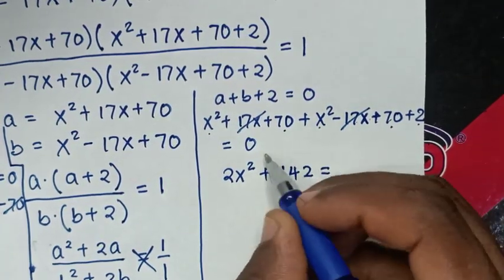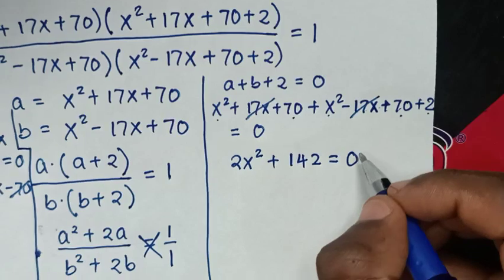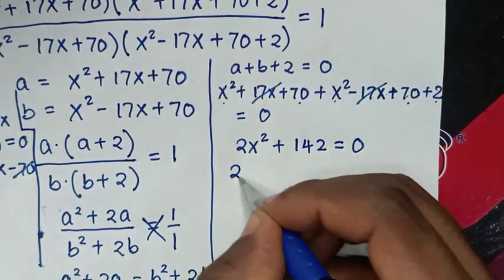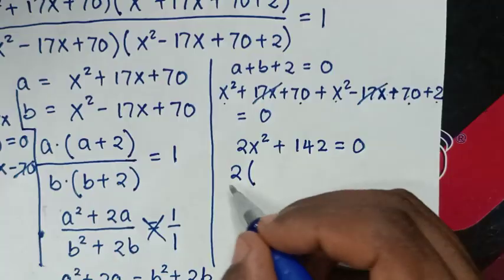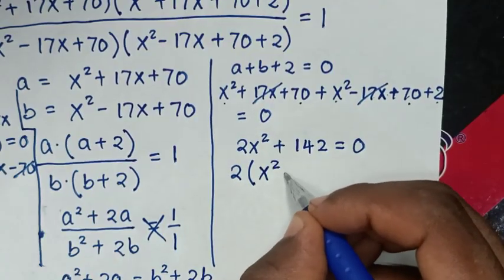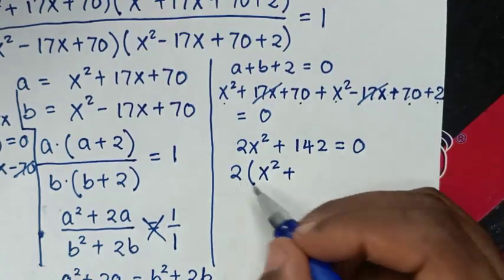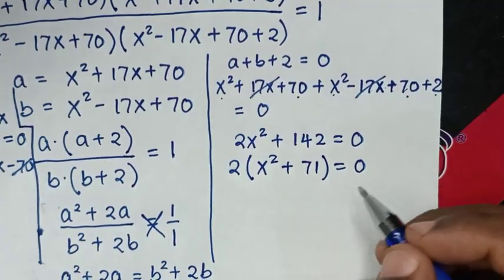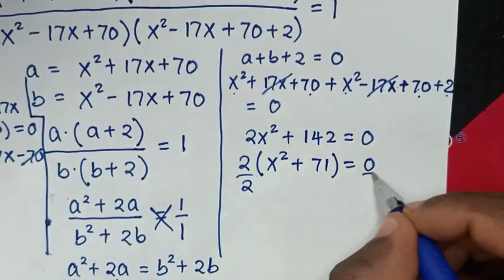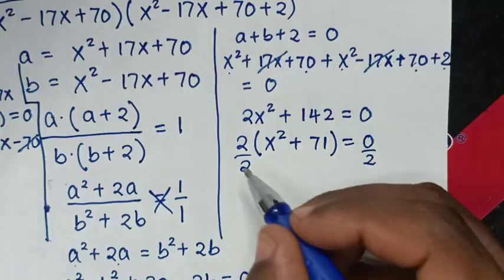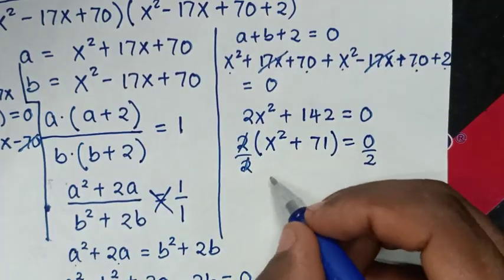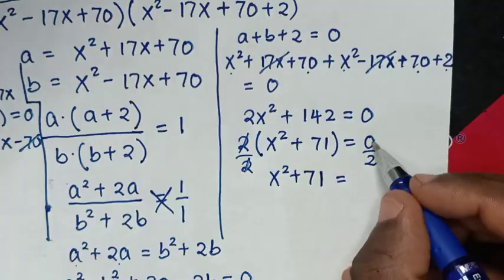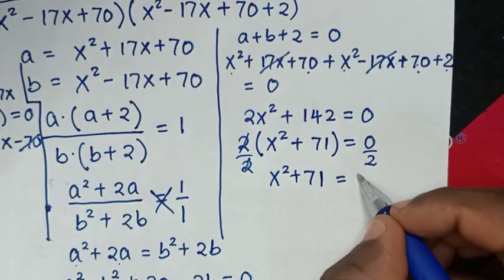Factoring out 2: 2(x²+71) equals 0. Dividing both sides by 2 gives x²+71 equals 0.